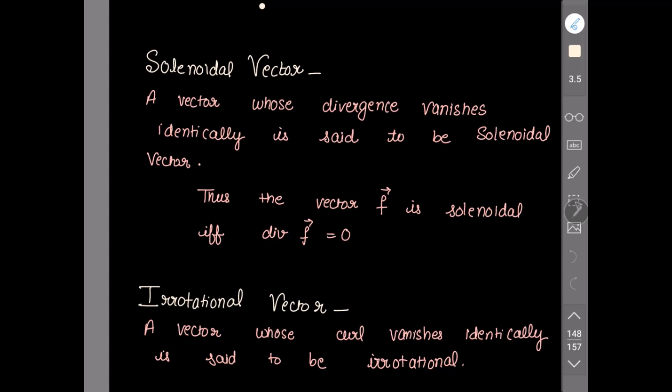Next is the irrotational vector. A vector whose curl vanishes identically is said to be an irrotational vector. That means del cross of any vector — if this is equal to zero — then it is an irrotational vector.